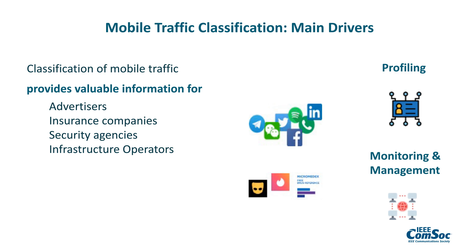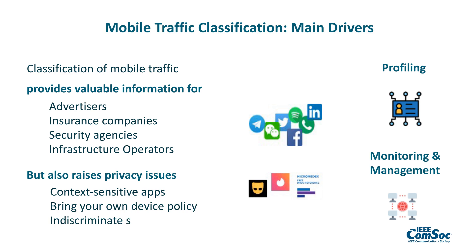Based on this information, stakeholders can provide informed profiling or perform advanced monitoring and management of the network. On the other hand, mobile traffic classification raises privacy issues related, for example, to context-sensitive apps or to indiscriminate surveillance in certain scenarios like enterprises.